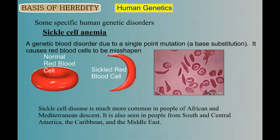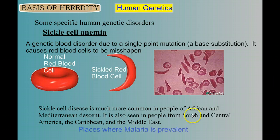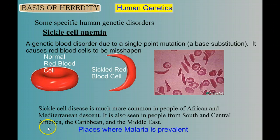Sickle cell disease is much more common in people of African and Mediterranean descent. It's also seen in people from South and Central America, the Caribbean, and the Middle East. These happen to all be places where malaria has been prevalent, and we'll talk about that more when we do our unit on evolution — but there's an interesting reason why that's true.